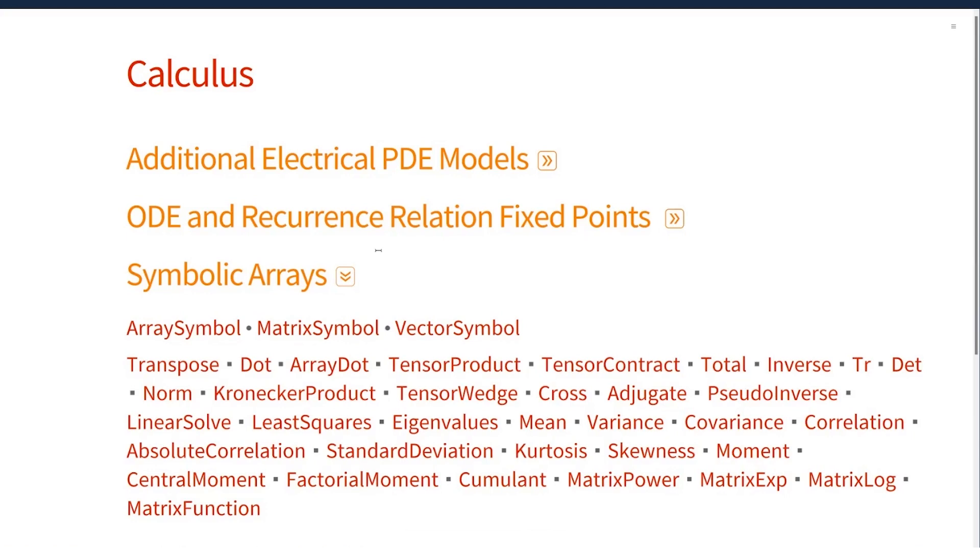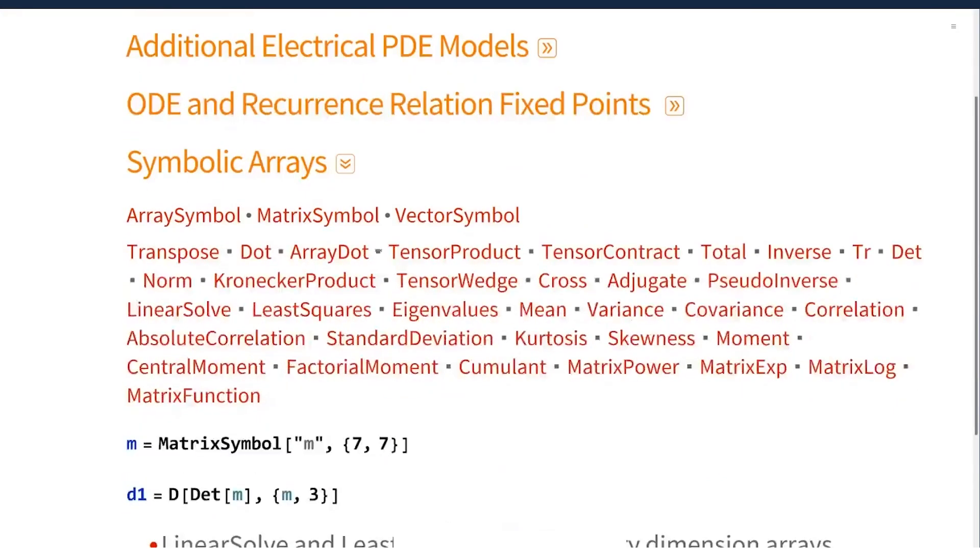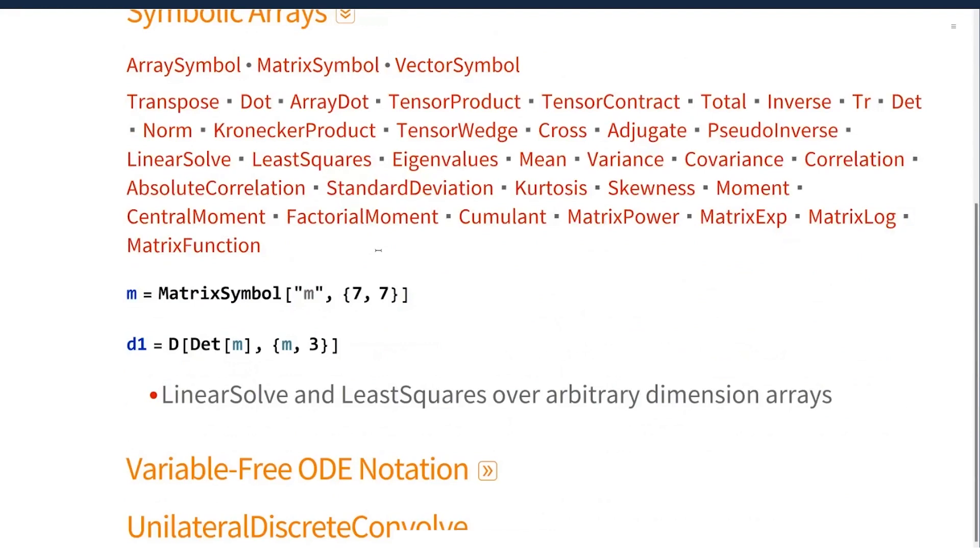That's both computationally much more demanding, but it also ends up with solutions that are basically unusable, that they might be technically correct but they're not in a form you can make use of. So now for the first time we're introducing a matrix symbol that allows me to declare a symbol m as being a matrix.